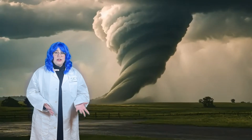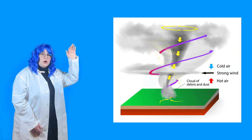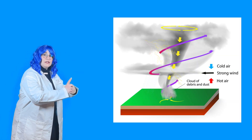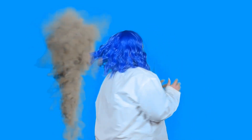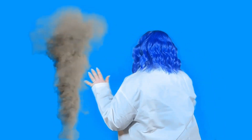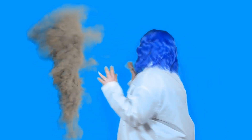So where do tornadoes come from? How do they start in the sky? What happens is warm air rises and cold air sinks, and when that happens it starts to spin, and when it spins a tornado can form in the sky. And guess what? Tornadoes always spin. Some spin to the right and some spin to the left. Can you spin? Let's spin like tornadoes!